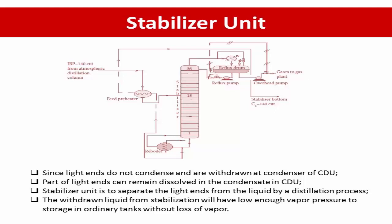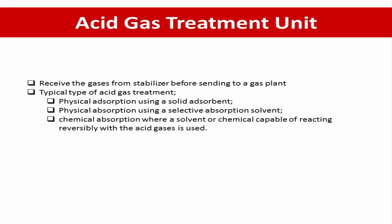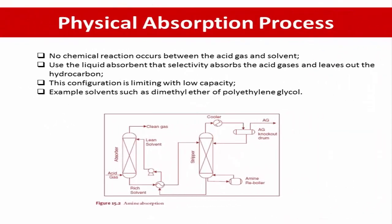The gas from the stabilizer goes to the gas plant where hydrogen sulfide associated with the hydrocarbon is removed by solvent extraction — typically using diethanolamine (DEA) solution. Acid gas treatment can be accomplished by several methods: physical absorption using selective absorption solvents, physical absorption using solids as sorbents, or chemical absorption where a solvent reacts reversibly with the acid gas. For physical absorption, no chemical reaction occurs between the acid gas and solvent. The liquid absorbent selectively absorbs the acid gas and leaves out the hydrocarbon — for example, dimethyl ether or polyethylene glycol.